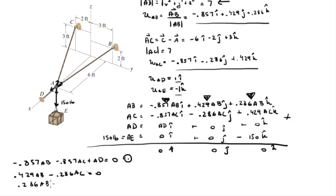0.286 a, b plus 0.429 a, c minus 150 is equal to 0. I'm calling this equation 2 and I'm calling this equation 3 and take a note because I'm going to turn the page because I run out of space.